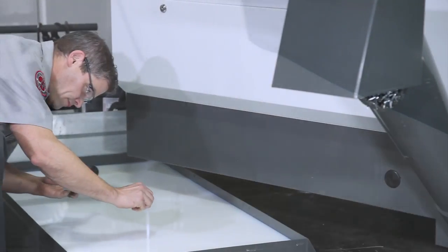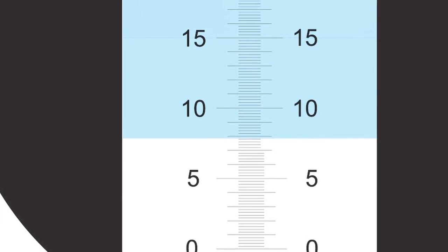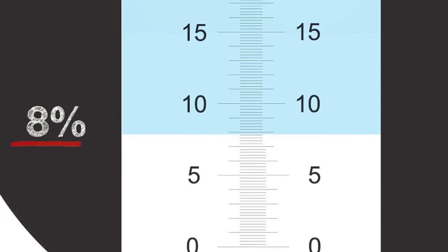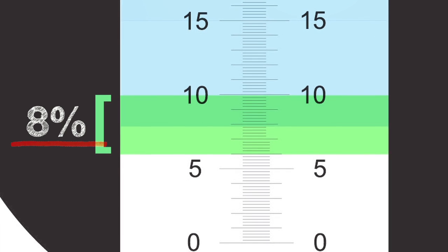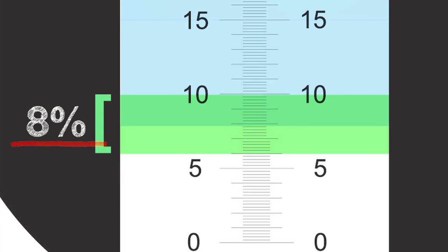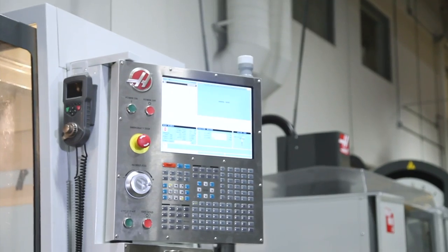When the tank is full and well mixed, check the concentration using a refractometer. Our coolant sample shows a reading just below 8%, right in the middle of our desired 6 to 10% range. Be sure to check out the Tools of Coolant video for information about using a refractometer.